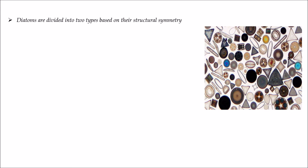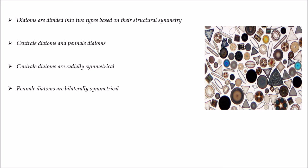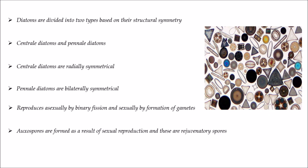Diatoms are divided into two types based on their structural symmetry: centric diatoms and pennate diatoms. Centric diatoms are radially symmetrical and pennate diatoms are bilaterally symmetrical. Reproduction in diatoms is asexually by binary fission and sexually by formation of gametes. As a result of sexual reproduction, the spores formed are called auxospores, and these are rejuvenatory spores.